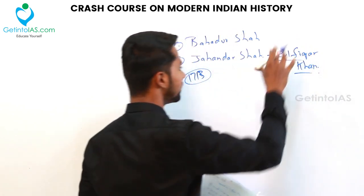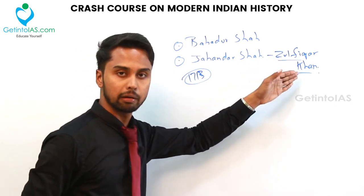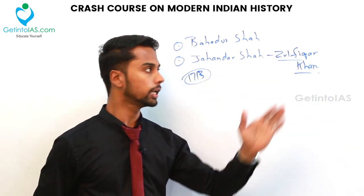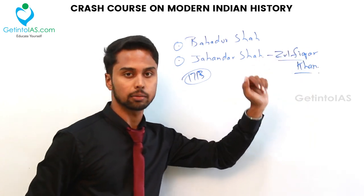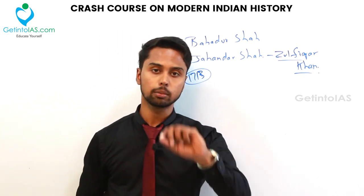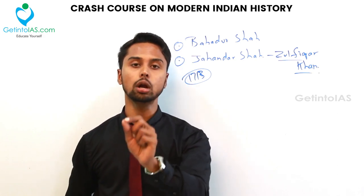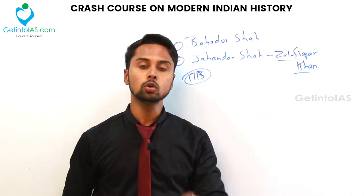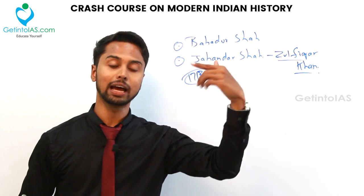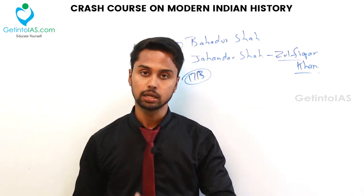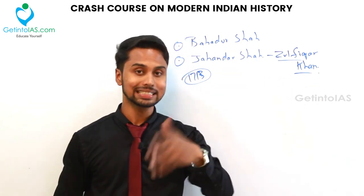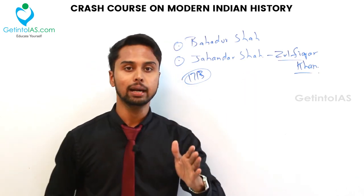Zulfikar Khan had the real power. His first important act was abolishing Jizya — the tax on non-Muslims. With respect to Jai Singh and Ajit Singh, the rulers of Amber and Marwar, they were made governors of Malwa and Gujarat respectively — their demands were accepted, which had not been done under Bahadur Shah. And with respect to the Marathas, Zulfikar Khan gave the right to collect tax, whereas Bahadur Shah had not.